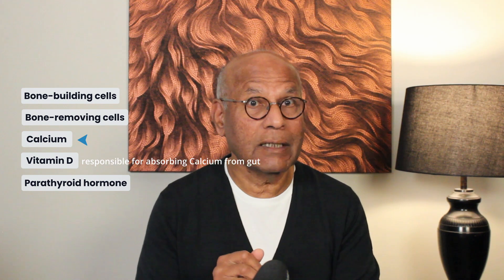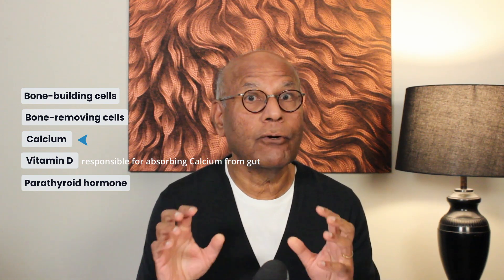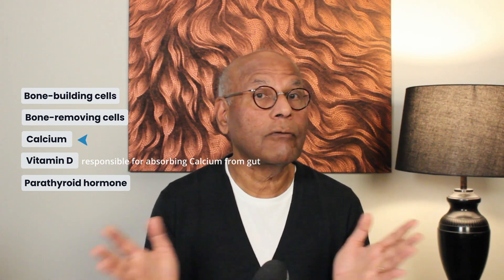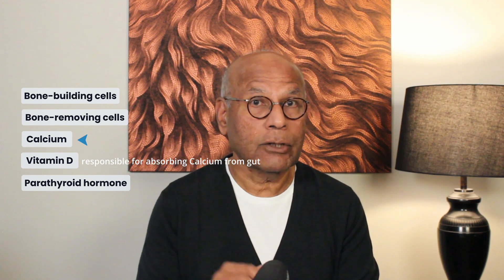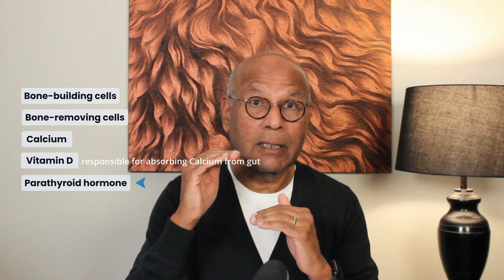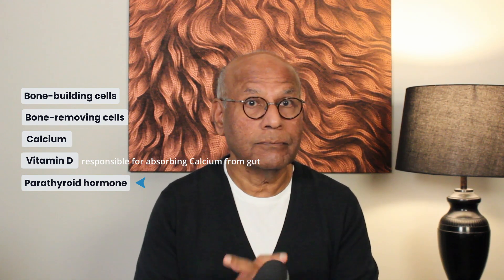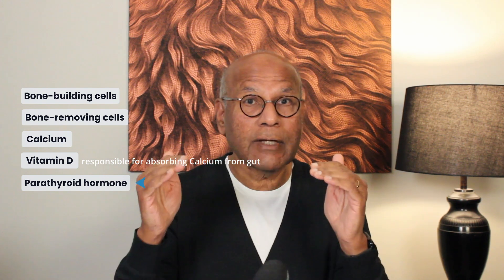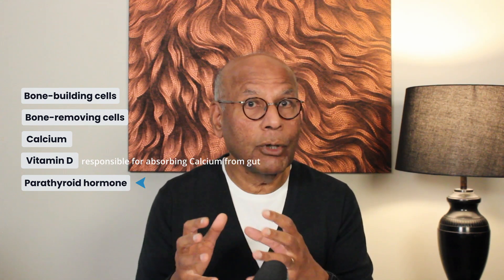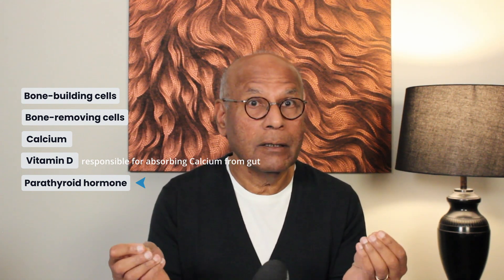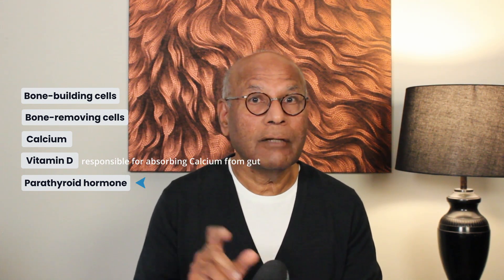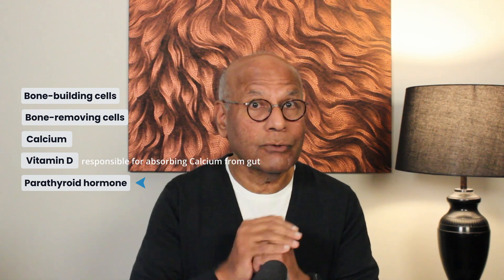The rest of that 1% is also needed for nerve conduction and for clotting of blood — important if you cut yourself and are bleeding. Now, the parathyroid hormone is responsible for keeping blood calcium at the required level for those functions. If the level of calcium in the blood drops, this hormone triggers the bone removal cells to remove bone and release calcium into the blood to bring that level back up to normal. So blood calcium is kept within a narrow range for those vital functions.